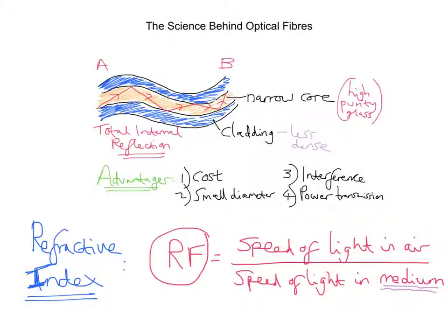To recap: the refractive index is a number which tells you how much the speed of a wave changes compared to the speed in the reference medium. And if we think of the structure of the optical fibre — the core and the outer cladding — the outer cladding has a lower refractive index, and that enables the light to be totally internally reflected. I hope all that helps.